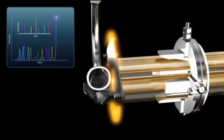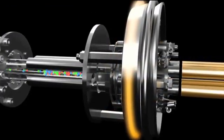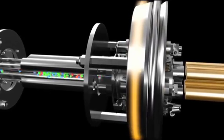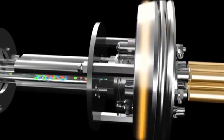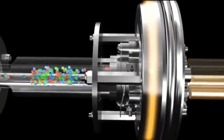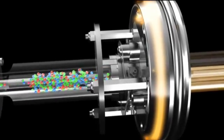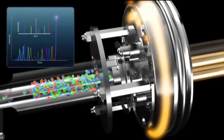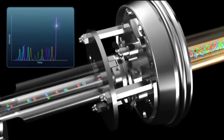During full-scan MS-MS acquisition, concurrent Q0 trapping is enabled to ensure you never miss anything eluting from your LC column. Once sufficient MS-MS data have been acquired, the system returns to MRM mode to detect the next transition.